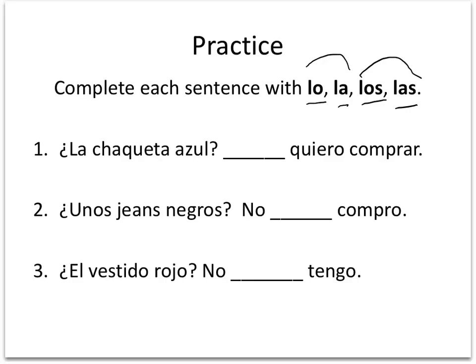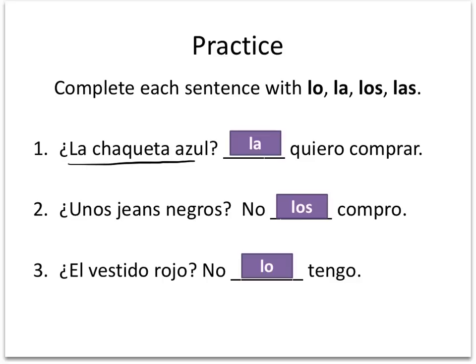So, la chaqueta azul — the blue jacket. You might say, I want to buy it. We end up with: La quiero comprar. We're going to use la and put it in front of the conjugated verb quiero.